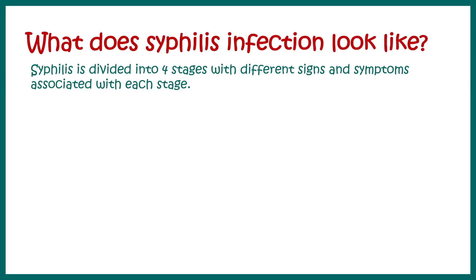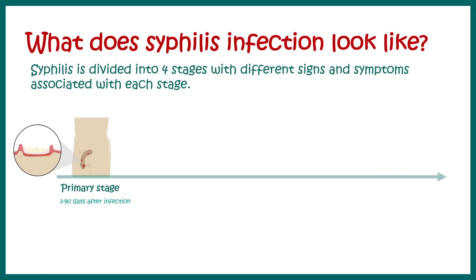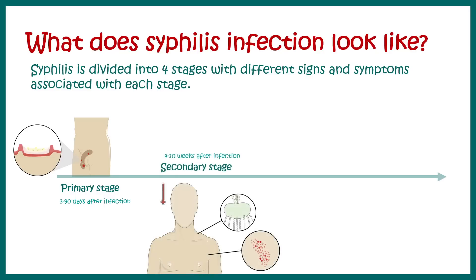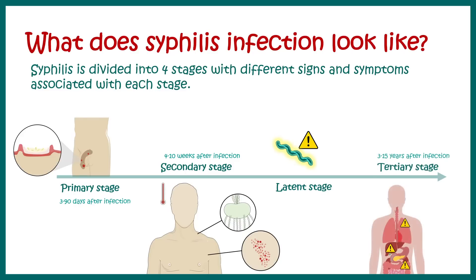Let's look at what syphilis infection looks like and what the stages are. Syphilis infection can be subdivided into four stages, each with different timelines. The primary stage occurs within 3 to 90 days of infection. The secondary stage is about 4 to 10 weeks after infection. There is a latent stage with no symptoms, and there could be a tertiary stage — if untreated, visible after 3 to 15 years of infection.